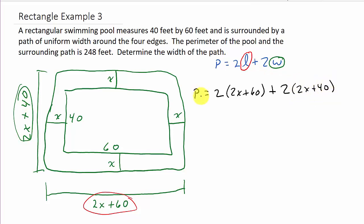Now, what does it say the perimeter is? The perimeter is 248 feet. So we'll change this to 248. Now all we do is solve this for x, and that'll give us the width of the path. So I've got 248 equals 4x plus 120 plus 4x plus 80. All I did was use the distributive property here and here.